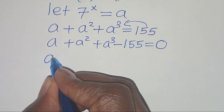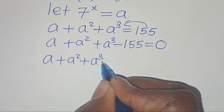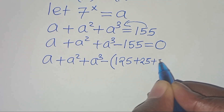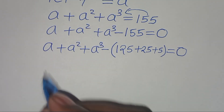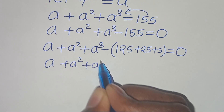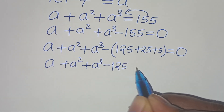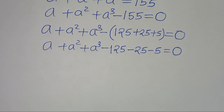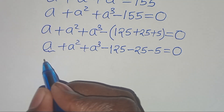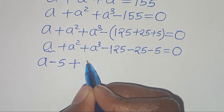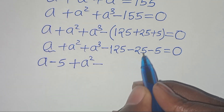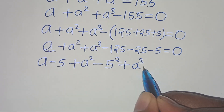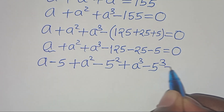This implies a plus a squared plus a to the power 3 minus 155, which is the same thing as 125 plus 25 plus 5, this is equal to 0. So we have a plus a squared plus a to the power 3 minus 125 minus 25 minus 5, this is equal to 0.